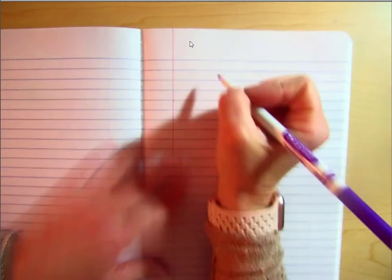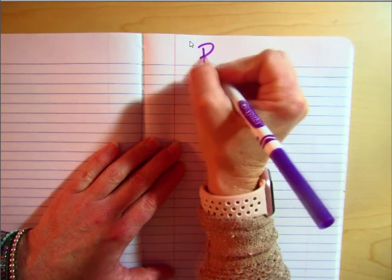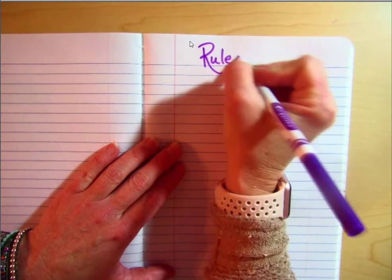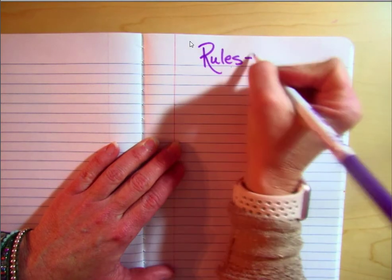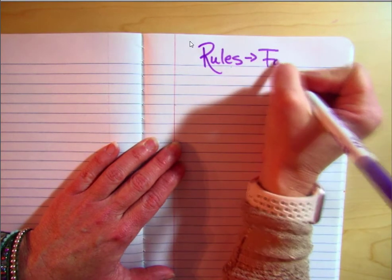This lesson is going to go over writing rules for input, output tables, and graphs. When we're talking about the rules, we're looking for a formula.